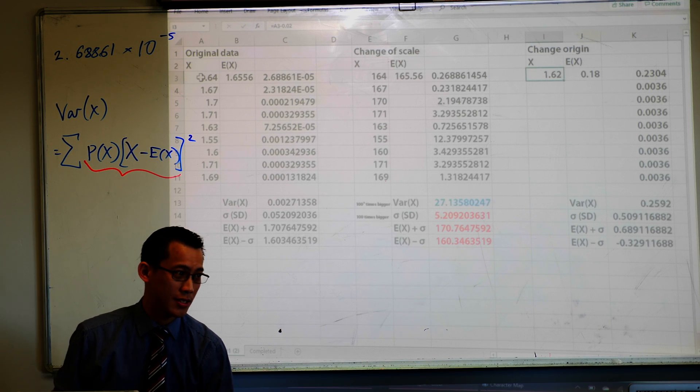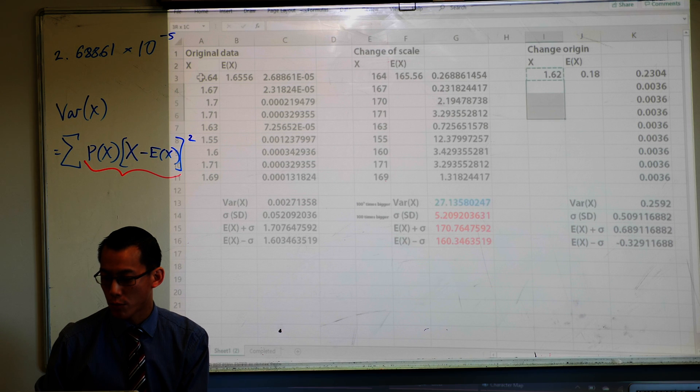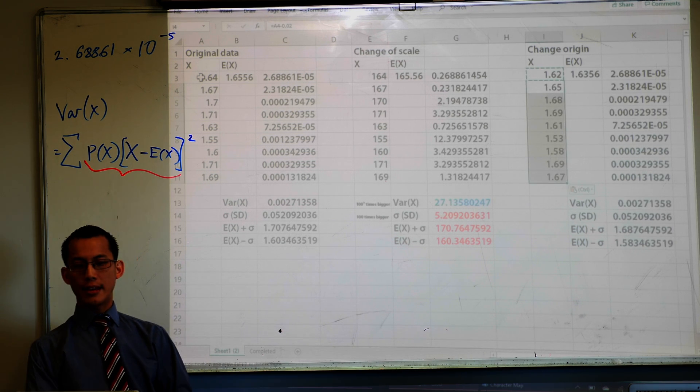Now this is just one so what am I going to do with this to get the rest of the data? Copy paste it all the way to all my other rows and I get this.